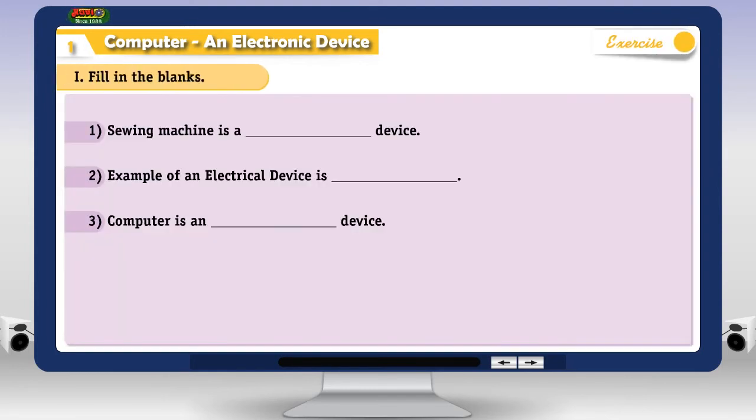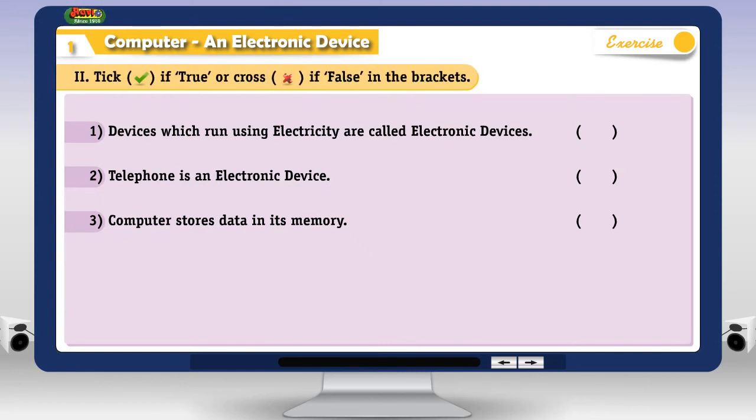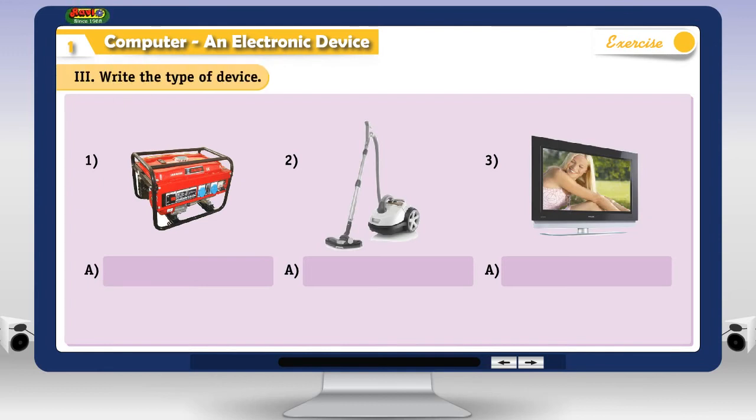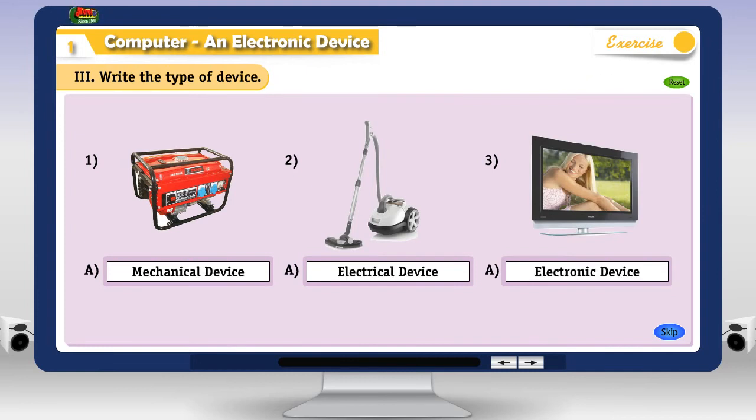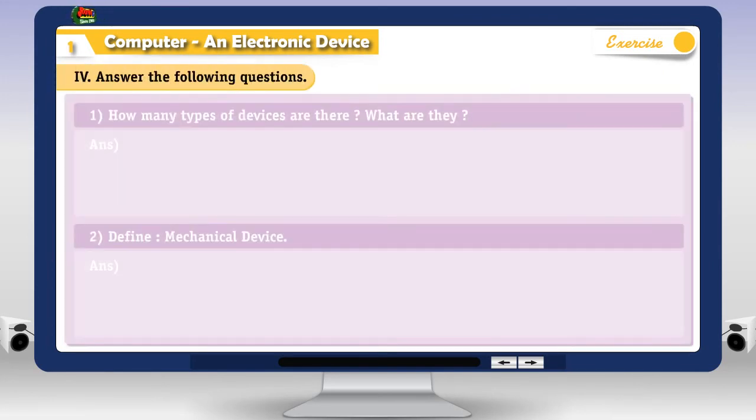Exercise 1. Fill in the blanks. 2. Tick if true or cross if false in the brackets. 3. Write the type of device. 4. Answer the following questions.